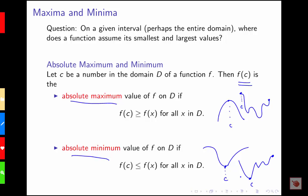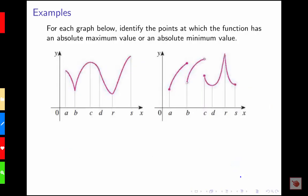Let's look at an example where we want to identify our maximum and minimum values. We have two different graphs. In the first one, if I'm looking for where my absolute maximum value is located, that looks like it's over here — this is the biggest y value, greater than all other y values of this function. So that's occurring at point s.